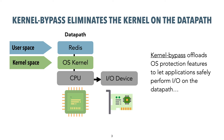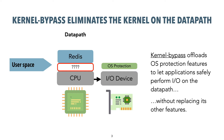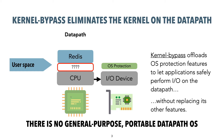Recent kernel bypass devices and systems remove the OS kernel from the datapath, then offload the needed OS protection features to the I/O device that let applications safely perform I/O directly from user space. Unfortunately, they do not replace the OS kernel's other features, like providing higher-level abstractions like sockets and files. Recent work has aimed to replace some of that OS management with user-level TCP stacks, schedulers, and storage systems, but none have offered a general-purpose portable datapath OS.